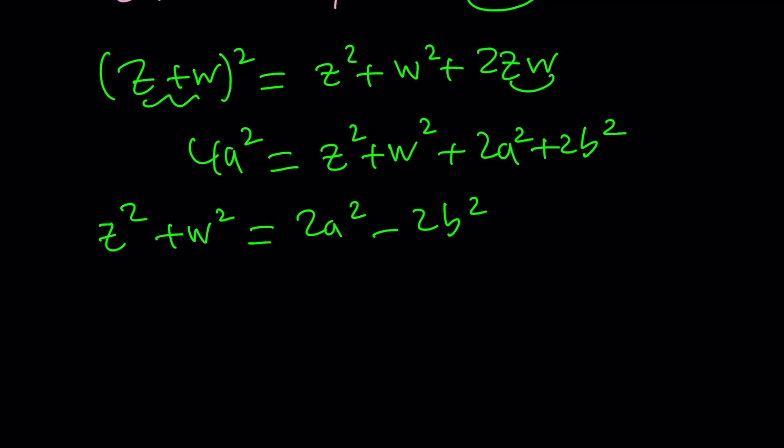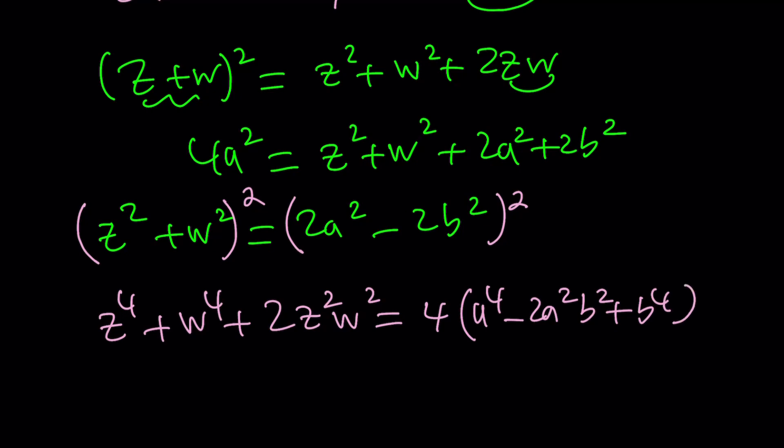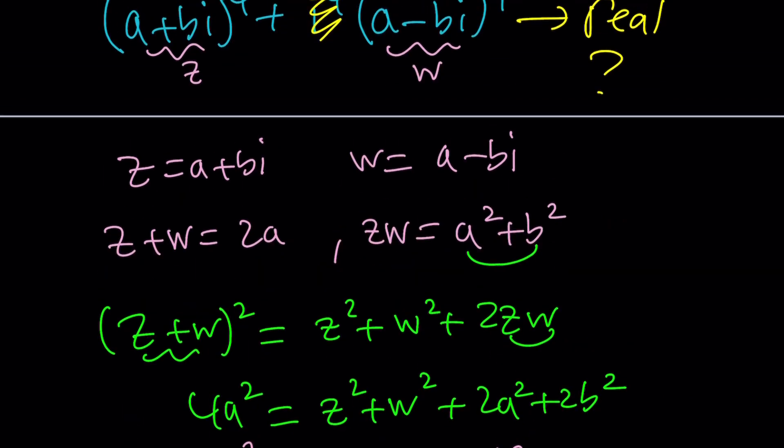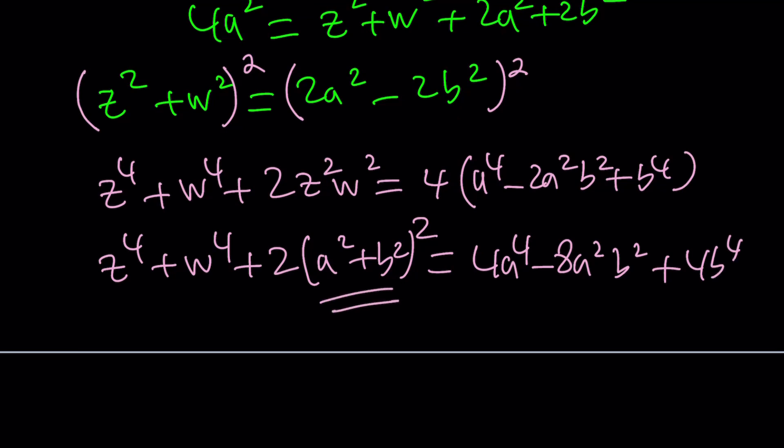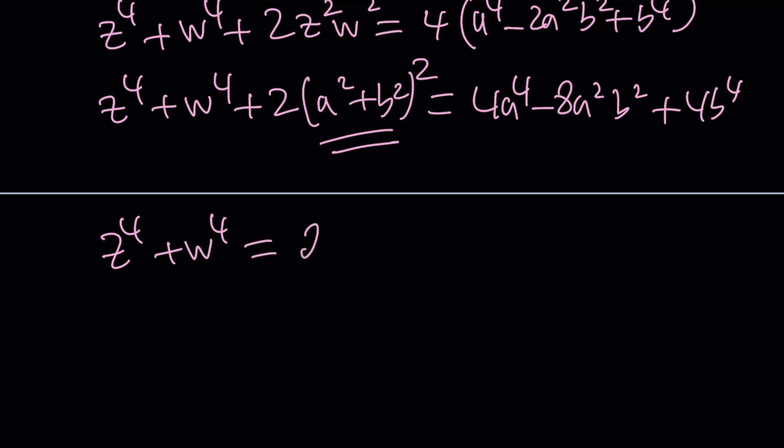Now we're going to do the following. To get to the fourth powers, we're going to square both sides again. And this is going to give us z⁴ + w⁴ + 2z²w² equals, if you square this expression, you're going to get 4 times (a²-b²)² which is a⁴ - 2a²b². Replace z²w² with this expression squared. So that's going to be z⁴ + w⁴ + 2(a²+b²)². This will equal 4a⁴ - 8a²b² + 4b⁴. When you expand this and subtract, you're going to get z⁴ + w⁴ as 2a⁴ - 12a²b² + 2b⁴. Of course, there is going to be some type of symmetry here.